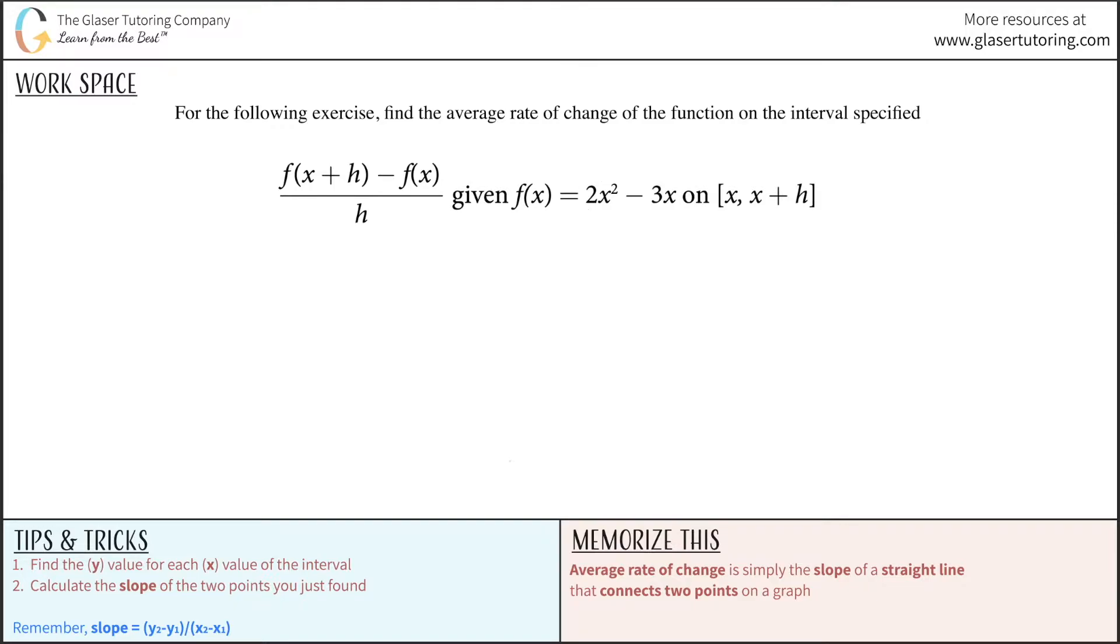So basically what we're going to do is I'm going to have to write out first the function of x plus h. So basically what we're looking to do, if this thing is f of x, and I want to find f of x plus h, all I have to do is take all of these x values and just substitute in x plus h for them. So that's what we're going to do first. To find this part of the equation, I'll color code this.